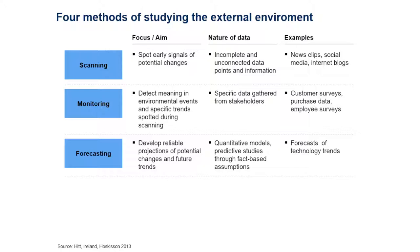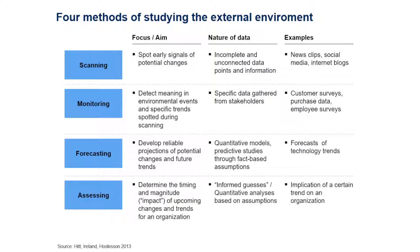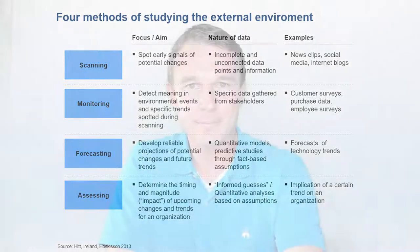Once we have a good forecast, we go one step deeper and try to assess the timing and magnitude — the order of impact — that we could expect. The nature of this data involves informed guesses; there is quantitative analysis but a lot has to do with scenario analysis, because it's very hypothetical and often quite difficult to get reliable data. So scanning, monitoring, forecasting, and assessing are the four methods we typically use.